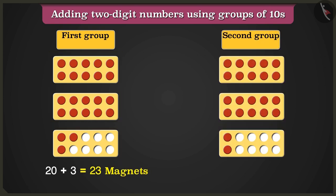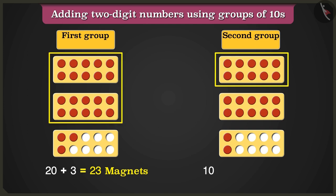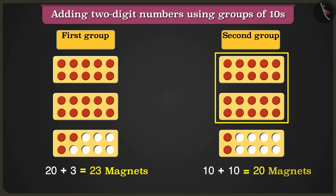In the next group of 10s frame, adding 10 and 10 makes 20 and adding 2 more will be equal to 22 magnets.